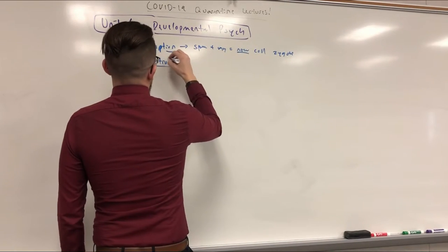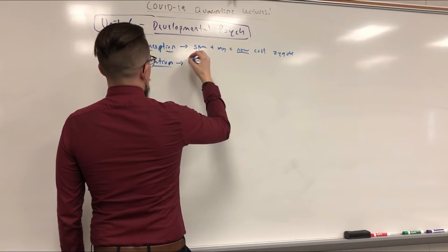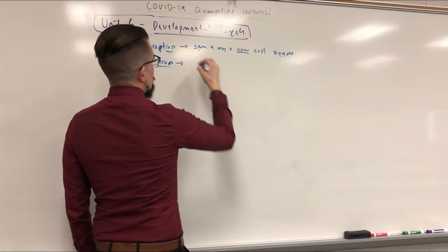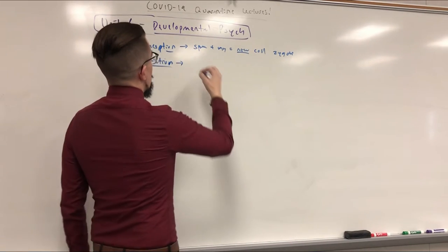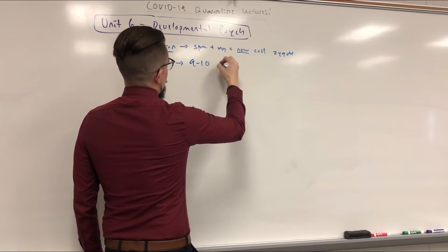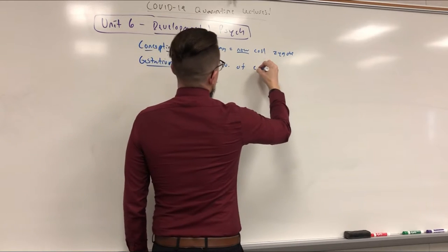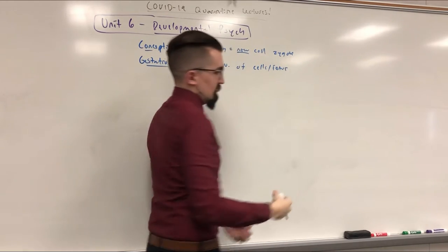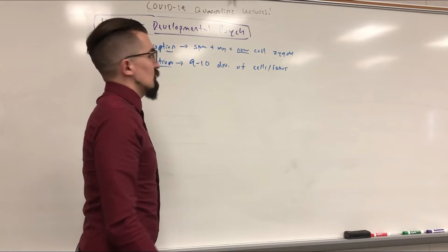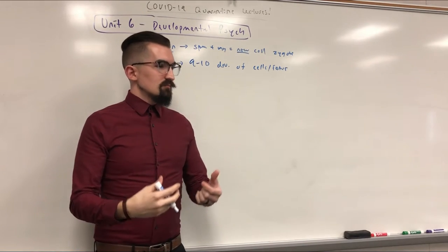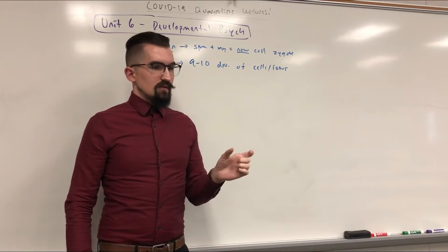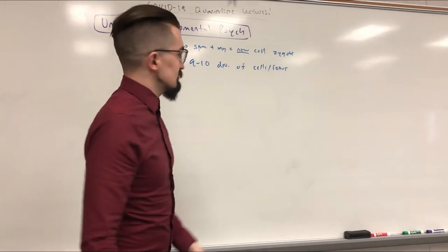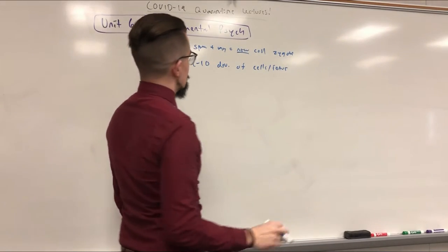Gestation is actually a little closer to ten months — between nine and ten months depending, unless there's a premature birth. It's a nine-to-ten month development of cells and fetus until the baby is born, whether that's regularly through the vaginal canal, or it's an emergency C-section, or a scheduled C-section if there's going to be some sort of complication or difficulty.